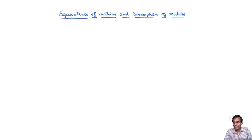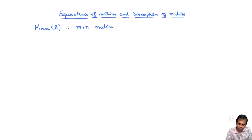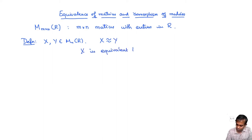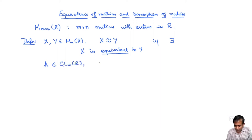This is an equivalence relation on rectangular matrices over a commutative ring R. Let R be a commutative ring and let M×N(R) denote M by N matrices with entries in R. Definition: We say that X, Y in M×N(R) are equivalent if there exist matrices A in GL_M(R) and B in GL_N(R) such that Y = AXB.